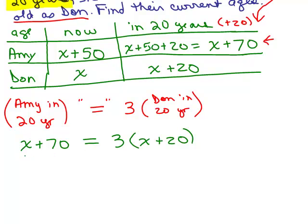We've got that Amy's age equals three times Don's age, but we have to look at their age in 20 years, not right now. So now we need to solve this equation to find out what X is. Once we find X, we'll know how old Don is now, and then if we add 50, we'll know Amy's age. Go ahead, put the video on pause and try it on your own first.